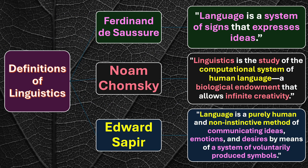Moving on to the next definition, given by Edward Sapir. He says language is a purely human and non-instinctive method of communicating ideas, emotions, and desires by means of a system of voluntarily produced symbols. This definition has four key components: purely human, non-instinctive method, to communicate ideas/emotions/desires, and a system of voluntarily produced symbols.